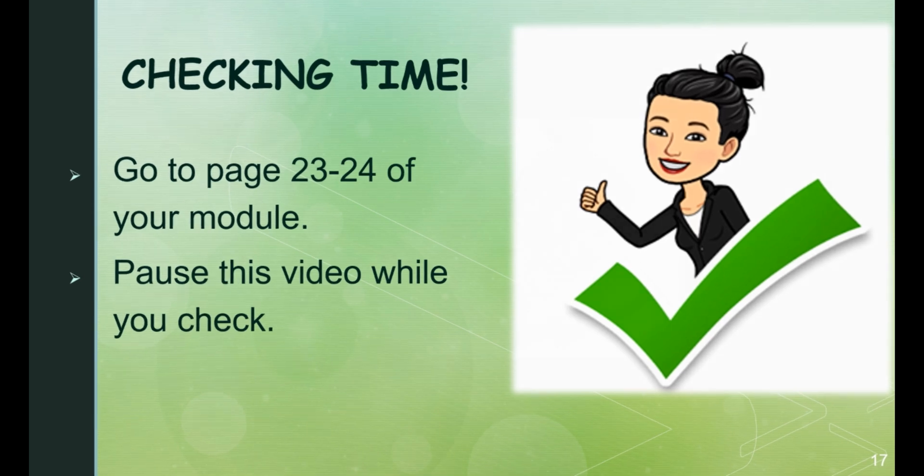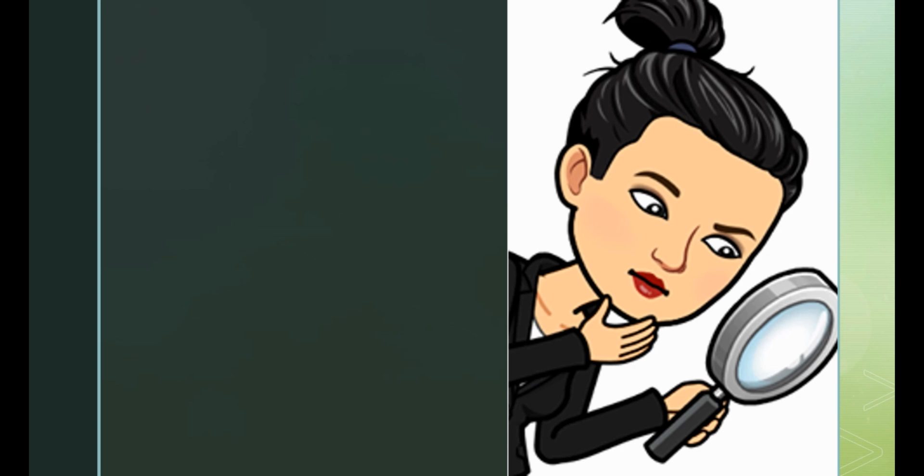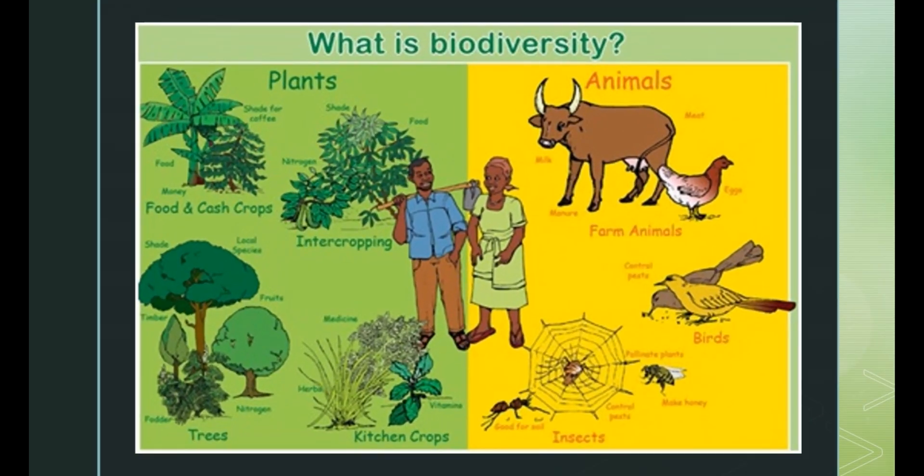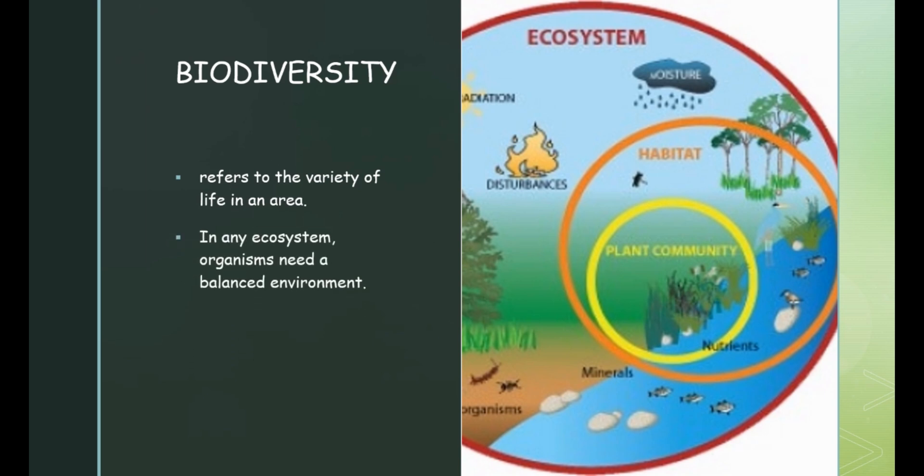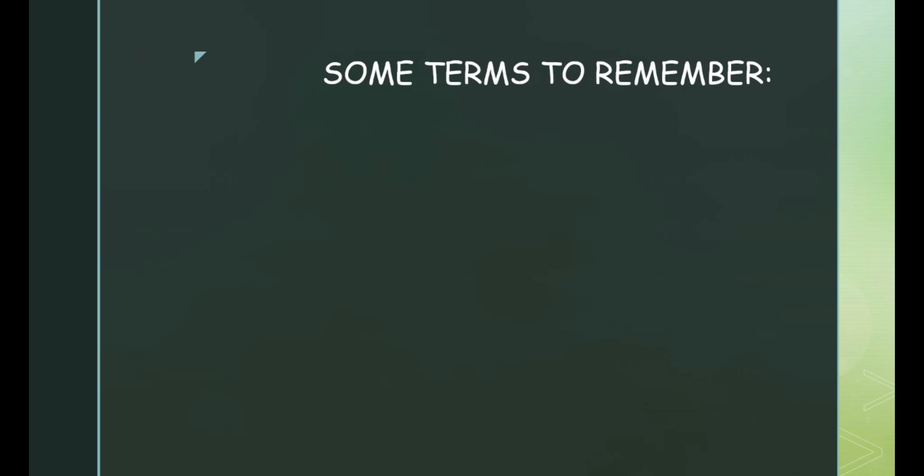So do you have an idea what we're going to talk about today? That's right. We're going to be talking about biodiversity. What is biodiversity? Biodiversity refers to the variety of life in an area. In an ecosystem, organisms need a balanced environment. If any part of the ecosystem is disturbed, other parts will also be disturbed.